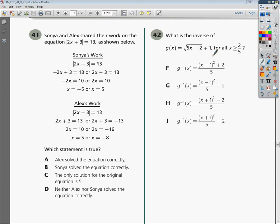Then they say, which statement is true? A. Alex solved the equation correctly. B. Sonia solved the equation correctly. C. The only solution for the original equation is 5. Or D. Neither Alex nor Sonia solved the equation correctly.